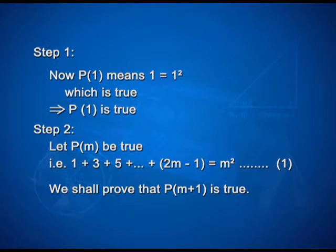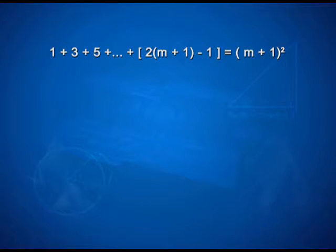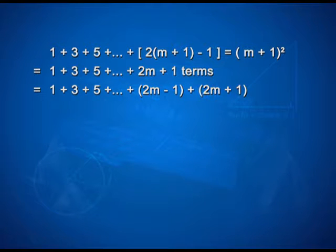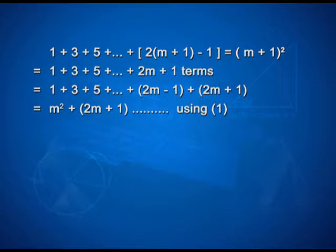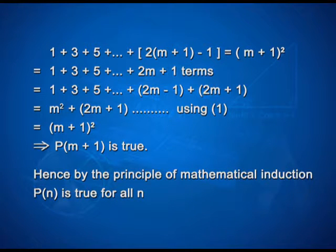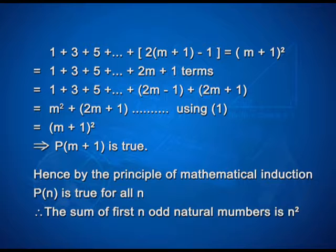Now we shall prove that P(m+1) is true, that is 1 + 3 + 5 + ... + (2(m+1)−1) = (m+1)². The left side can be rewritten as 1 + 3 + 5 + ... + (2m−1) + (2m+1). Using equation 1, this equals m² + 2m + 1, which is the expansion of (m+1)². Therefore P(m+1) is true. Hence, by the principle of mathematical induction, P(n) is true for all n, and the sum of first n odd natural numbers is n squared.